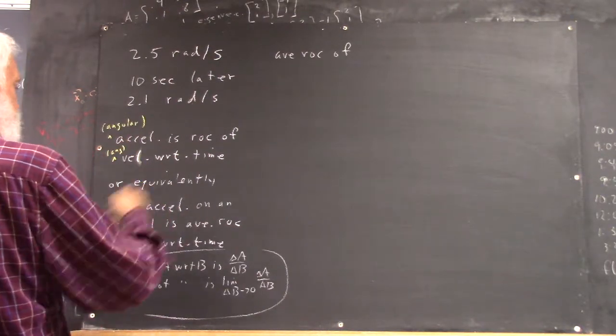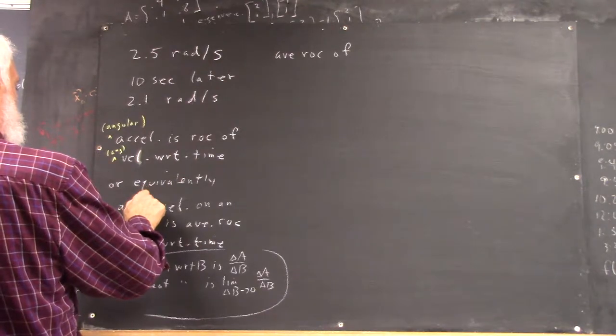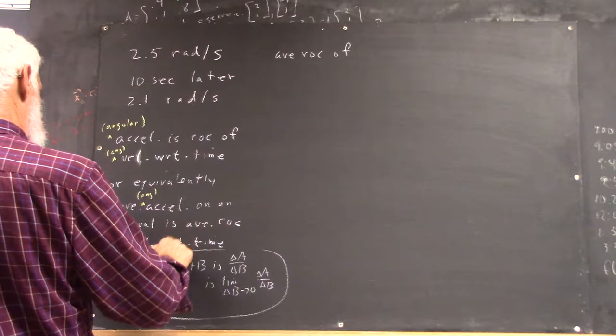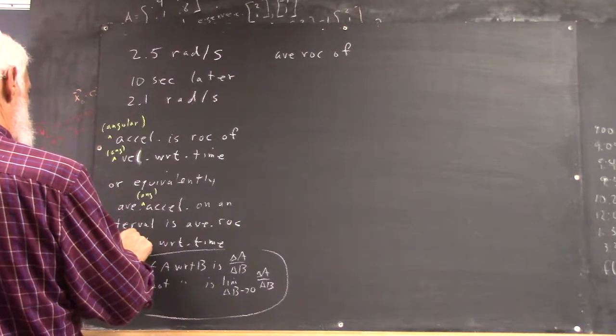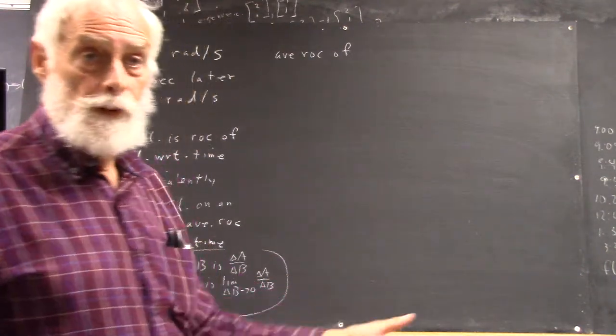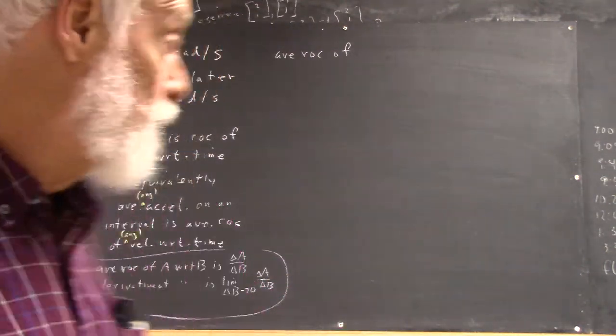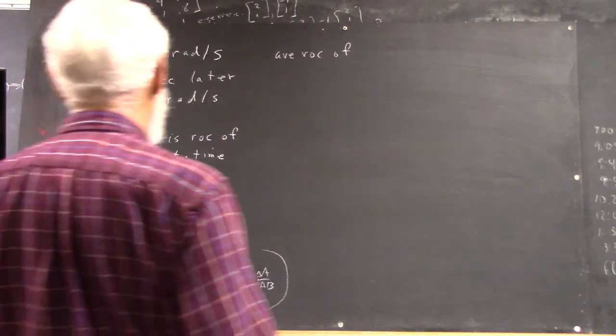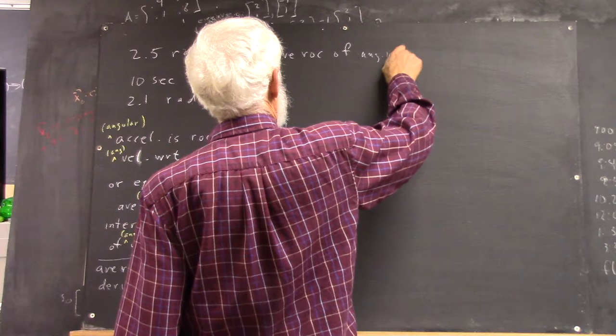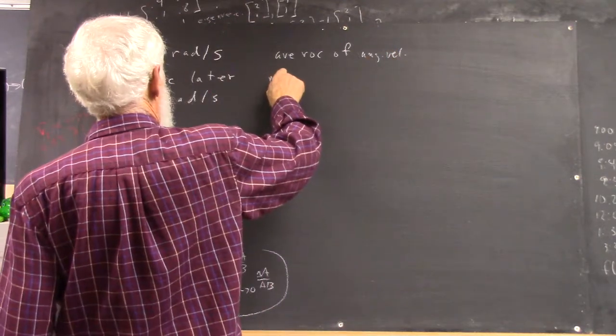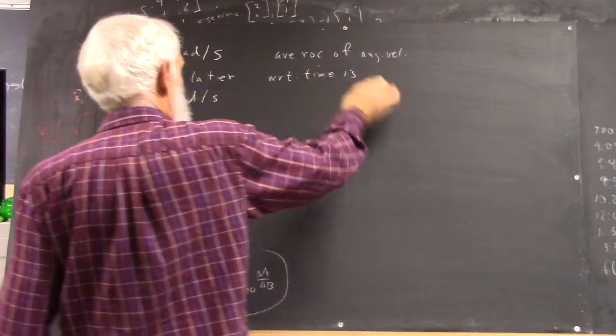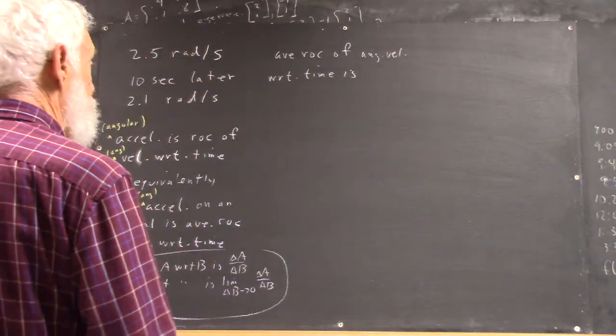So I'm going to put angular in parentheses in front of every velocity so we can apply it to velocities for acceleration. Average rate of change of A with respect to time is what?